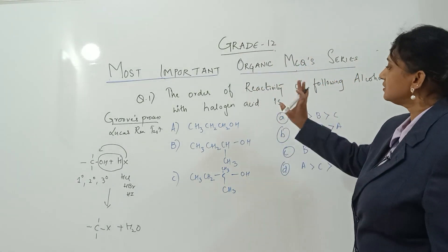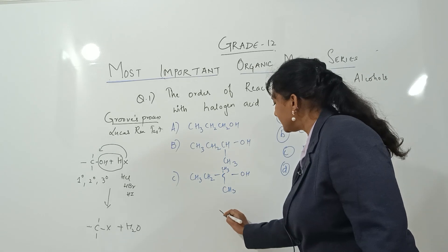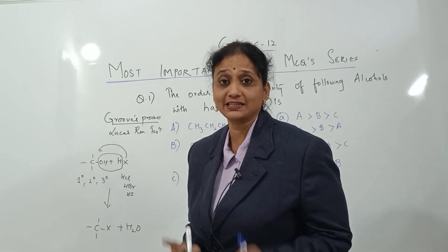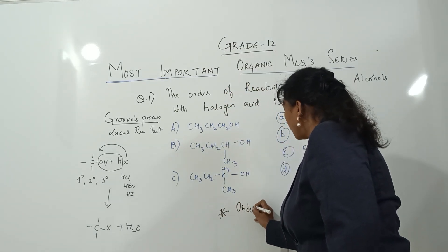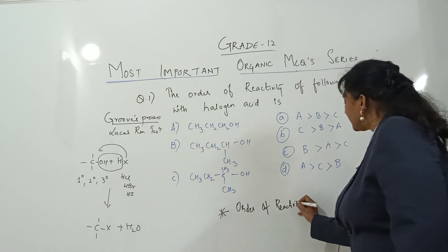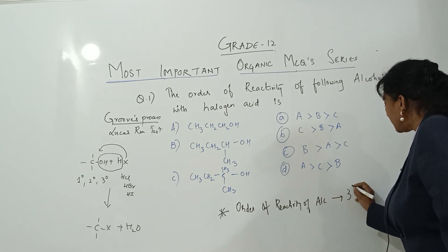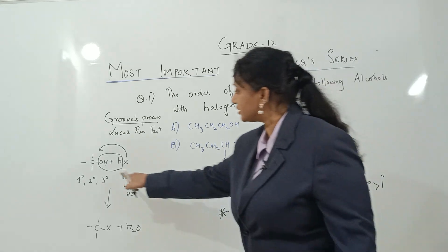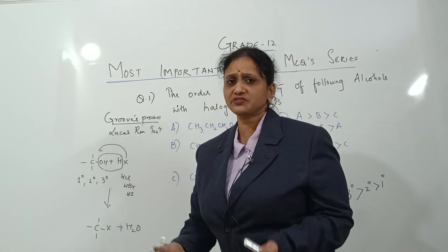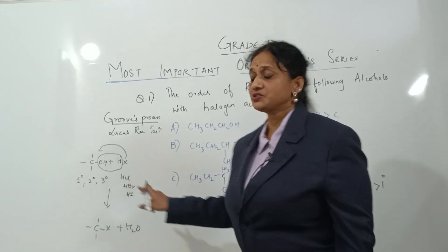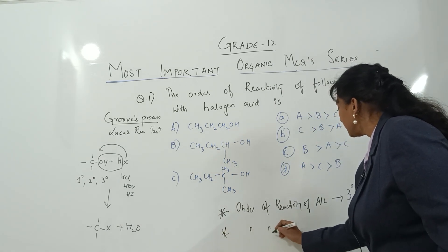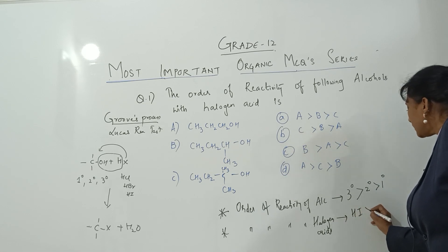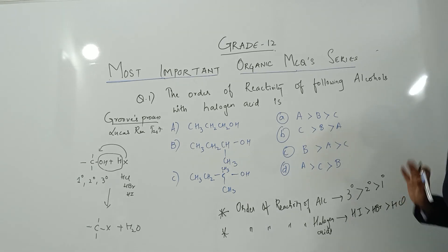From the examination point of view, remember two important concepts. First: the order of reactivity of alcohols with halogen acid — tertiary carbocation (which forms as an intermediate) is more stable than secondary, which is more stable than primary. Second: the order of reactivity of halogen acids — HI is more reactive than HBr, which is more reactive than HCl.